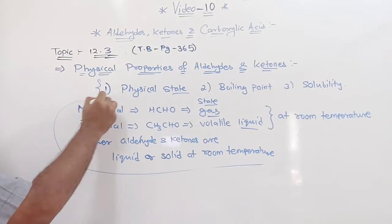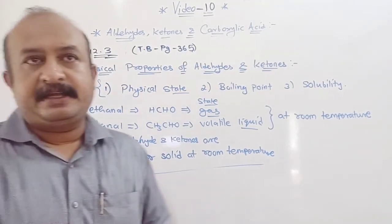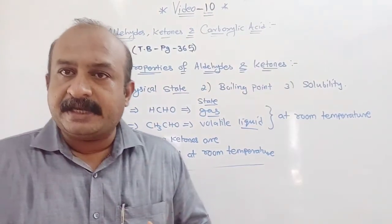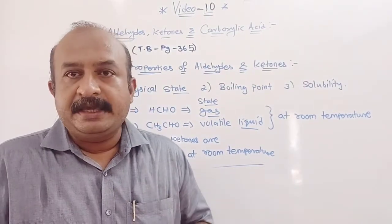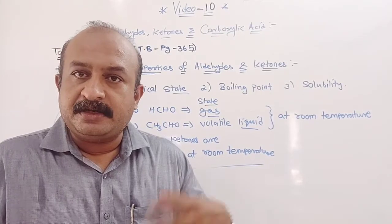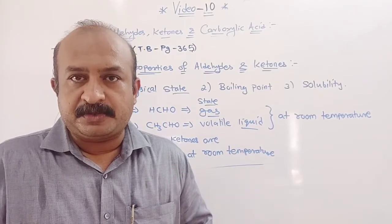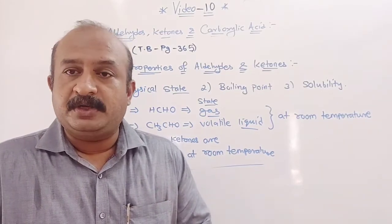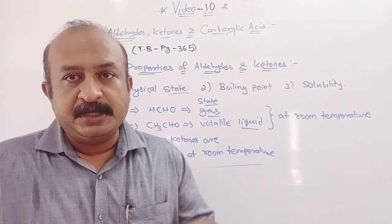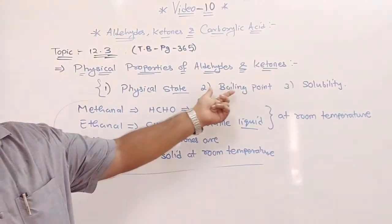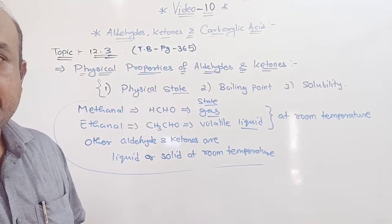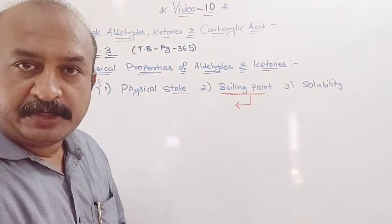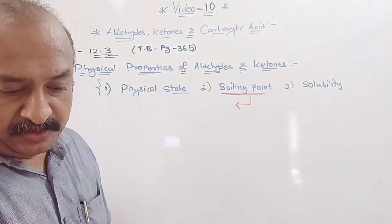So we have finished about the physical state. Now the second aspect is boiling point. In your book there is a tabular form given. The five compounds listed are: n-butane, methoxyethane, propanal, acetone, and propan-1-ol.